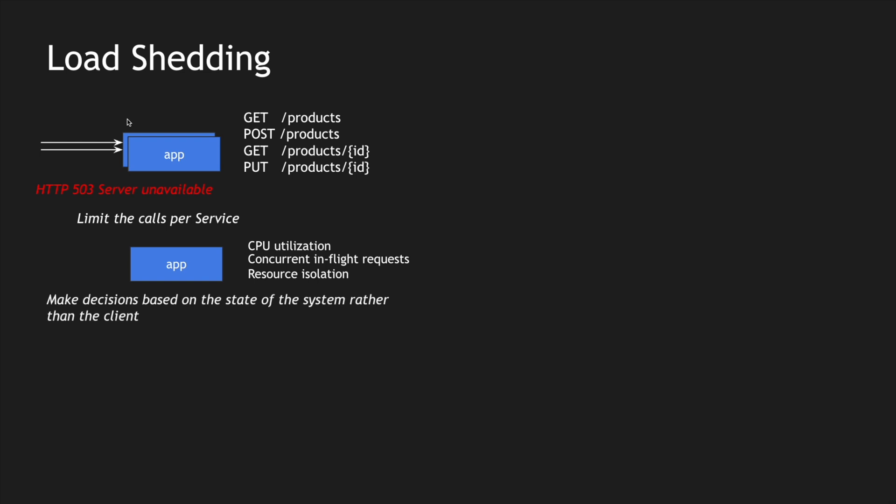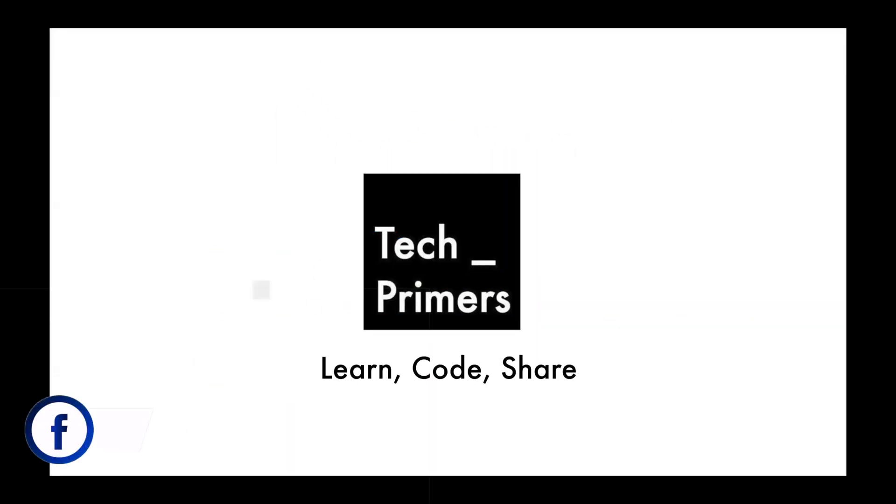Now how do we do this in Spring Boot? We are going to create a load shedding application, expose an endpoint called greetings, and use in-flight request counting. We'll restrict the application if requests exceed three — to simulate a simple scenario, since Tomcat has 200 threads by default. If four requests come into the greetings endpoint, the fourth request should return 503 while the first three continue processing. I'll make the endpoint sleep for a minute to simulate concurrent in-flight requests.